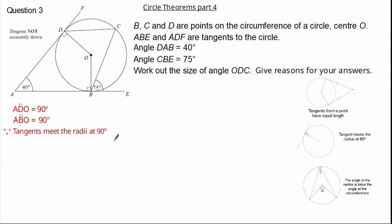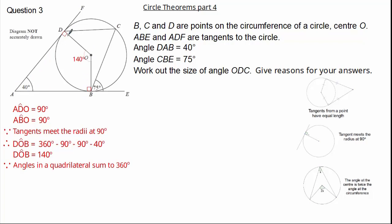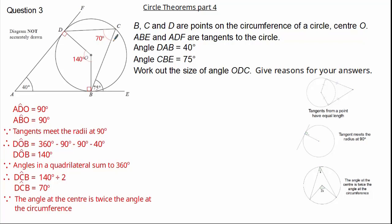Now from here we can work out angle DOB: 360 subtract our 90 subtract our 90 subtract our 40 gives us an angle of 140 degrees. This is because angles in a quadrilateral sum to 360 degrees. Now we know angles at the centre are twice that of the circumference, so therefore we can work out angle DCB to be 70 degrees, because 140 divided by 2 is 70.